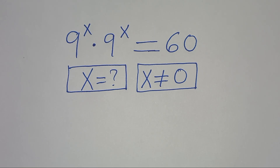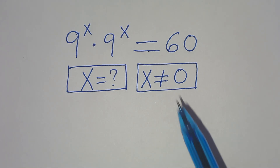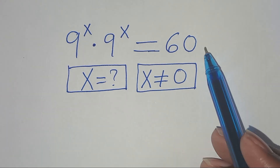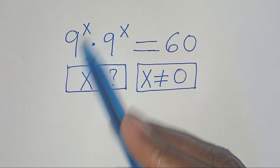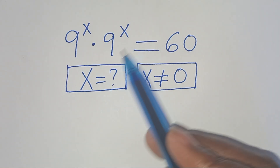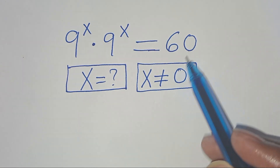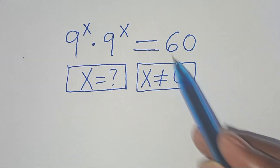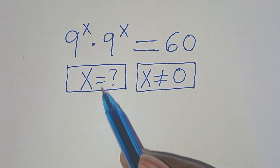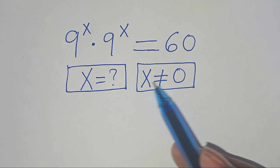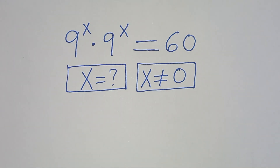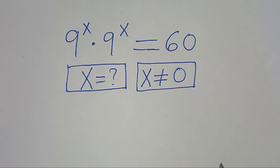Hello everyone, you are welcome to solve this nice exponential equation, which is 9 to the power of x times 9 to the power of x, and this is equal to 60. So what is the value of x, given that x is not equal to 0?